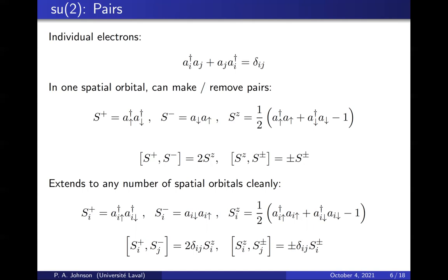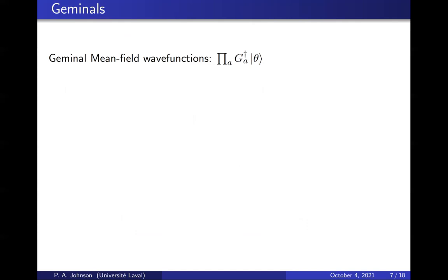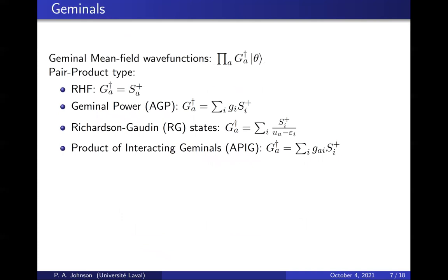So with those, we can build geminals. In particular, we can build geminal products or geminal mean field wave functions. There are many different kinds of geminals. The simplest is just restricted Hartree-Fock in which each geminal is just one pair. AGP is a geminal product in which each geminal is identical, and that is a variationally feasible wave function as shown by many different groups over the years, in particular Coleman and recently Scuseria.